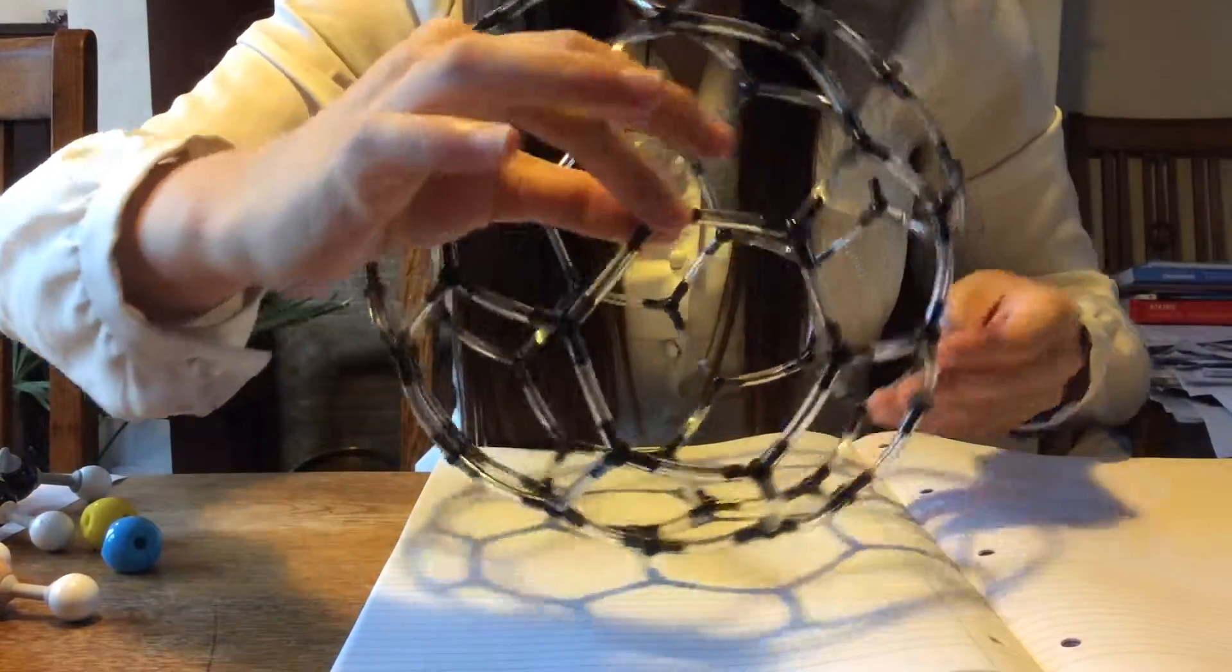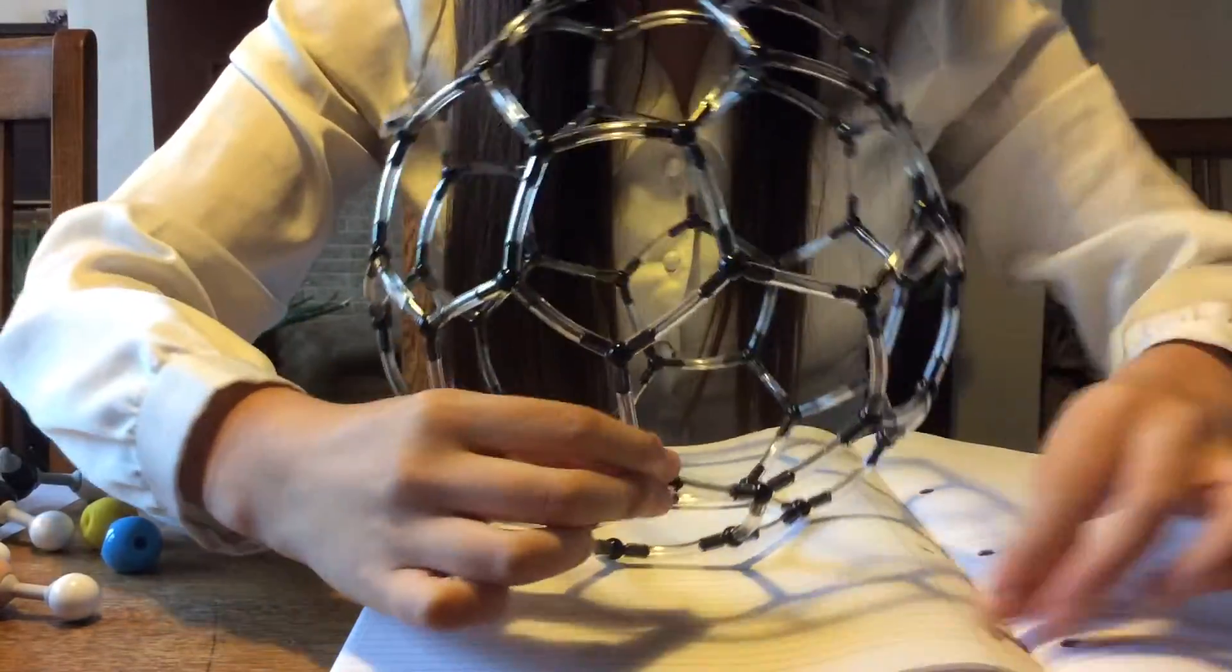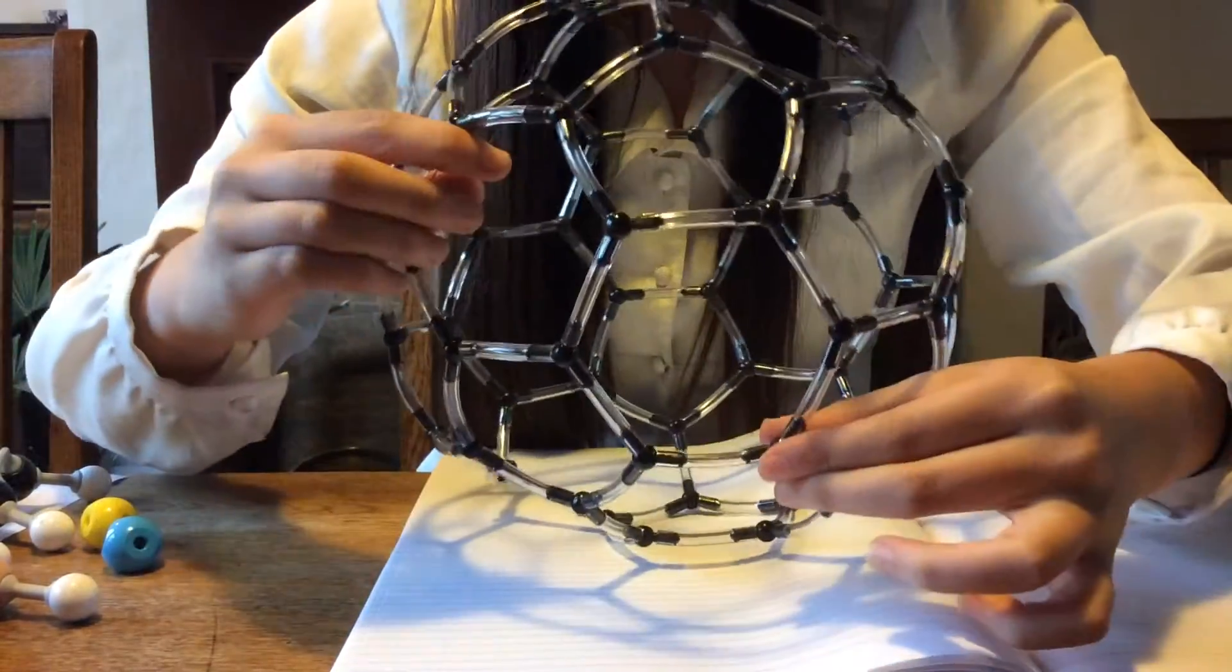As molecules get more complex, these permutations get more apparent. So, these complex molecules can be broken down into molecular shapes.